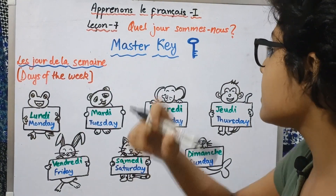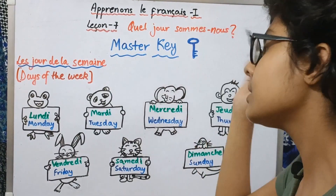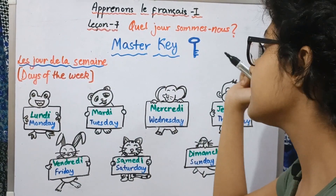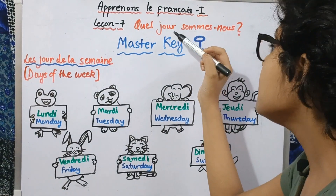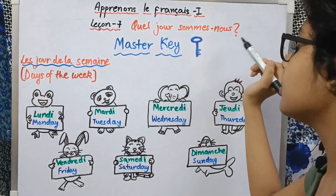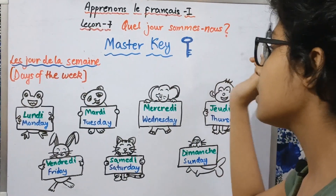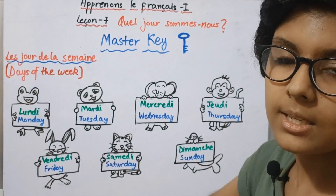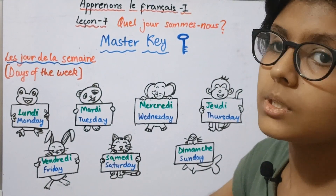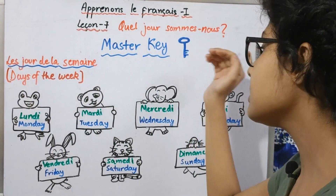Let us first quickly read the name of the chapter and understand its meaning. The chapter is called 'Quel jour sommes-nous,' which means 'Which day is it?' — or indirectly asking, 'What is the day today?'